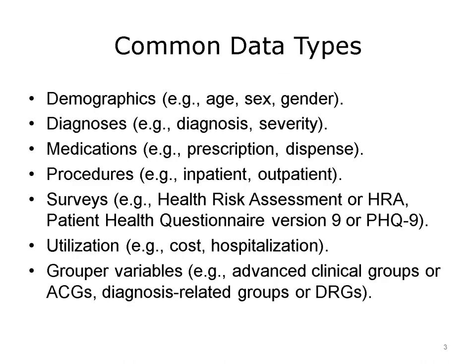Common data types used for population health data systems and analytics include demographics information, such as age, sex, and gender; diagnostic information, such as the actual diagnosis and severity of a diagnosis; medication information, such as prescriptions, dispenses, and filled medications; and procedures, such as medical evaluations, anesthetic procedures, surgeries, medical imaging, and other procedures occurring in inpatient and outpatient settings.